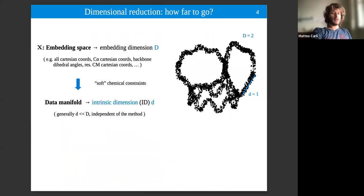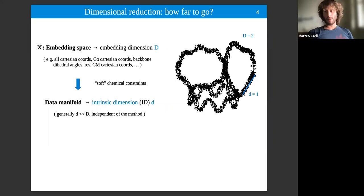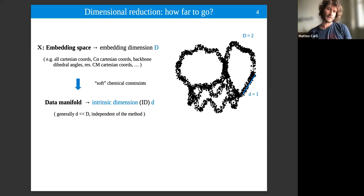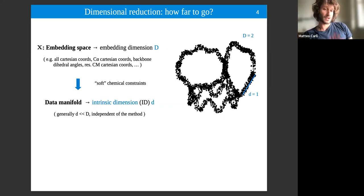At this point it is worth discussing the concept of intrinsic dimensionality. The embedding space contains all input coordinates — Cartesian coordinates of all atoms, alpha carbons, backbone dihedral angles — and has a dimension D, for example 3N. But due to soft chemical constraints and restraints — inhibiting visits to some parts of configuration space — the data distribute themselves on a manifold of dimension much lower than the embedding dimension.